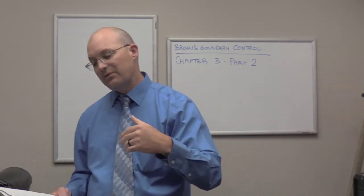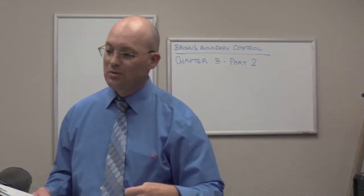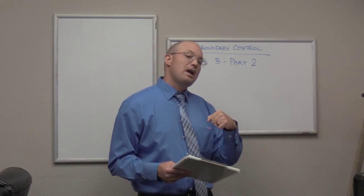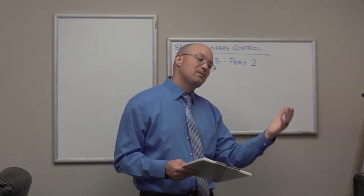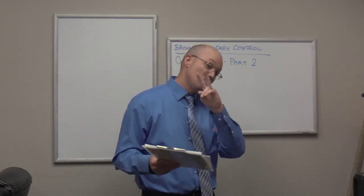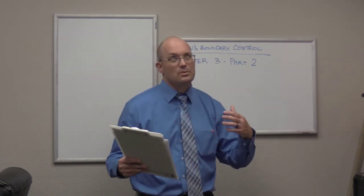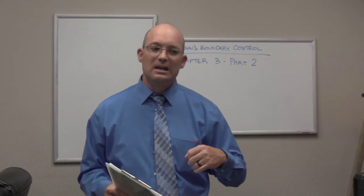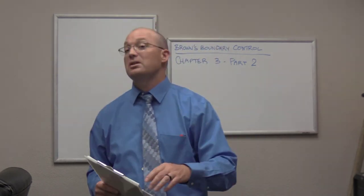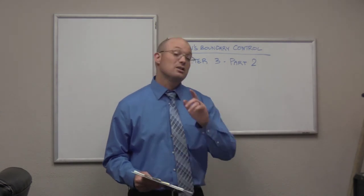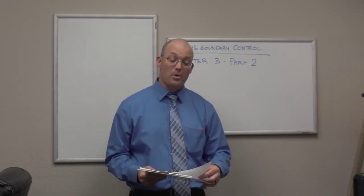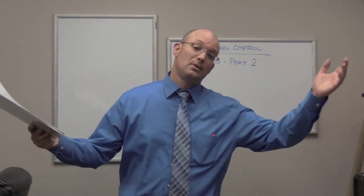He also mentions briefly that if you have a course in a land description with more than one call, so if you say along the center line of the creek and the south line of the lands of Blake, that's two calls. That can create a conflict potentially. I think he basically says don't do it. I don't know if I agree with that a hundred percent. In some circumstances, it can be appropriate to include more than one call, but I think you need to be really careful when you do it because he is correct. If it's not carefully done, it can create problems.